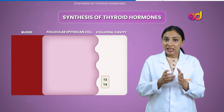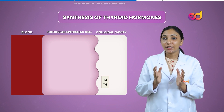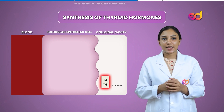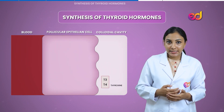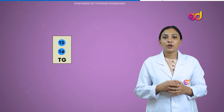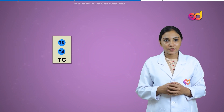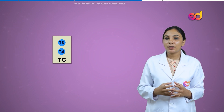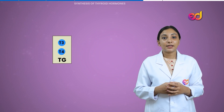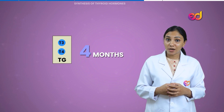Sequentially, MIT and DIT combine to form T3 and T4. T4 is also called thyroxine. Once synthesized, these thyroid hormones remain in the form of vesicles within the thyroglobulin and are stored for a long period of several months. This is a unique feature of the thyroid gland, as it is the only endocrine gland that can store its hormones for a long period — about four months.